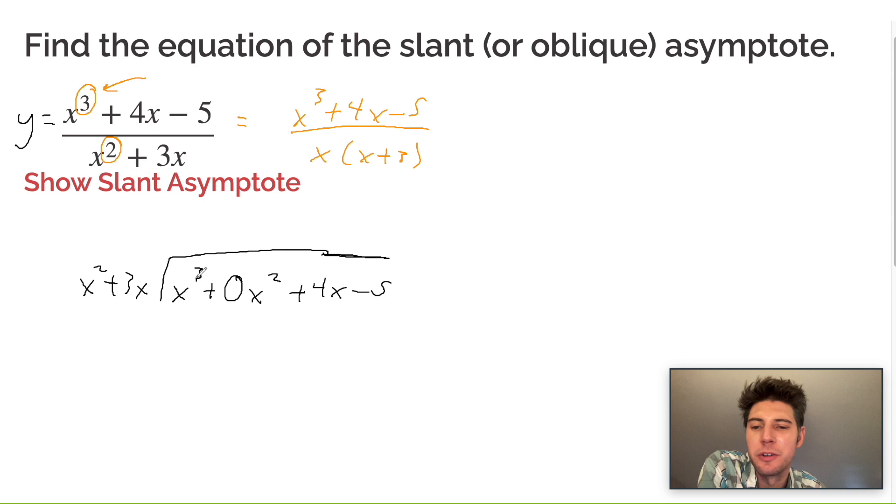First step, how many times does x squared go into x cubed? It goes in x times. x times x squared is x cubed. x times 3x is 3x squared. Now I'm going to subtract and that's going to make this a negative here. So these cancel and I'm left with negative 3x squared. And we can bring down the 4x.